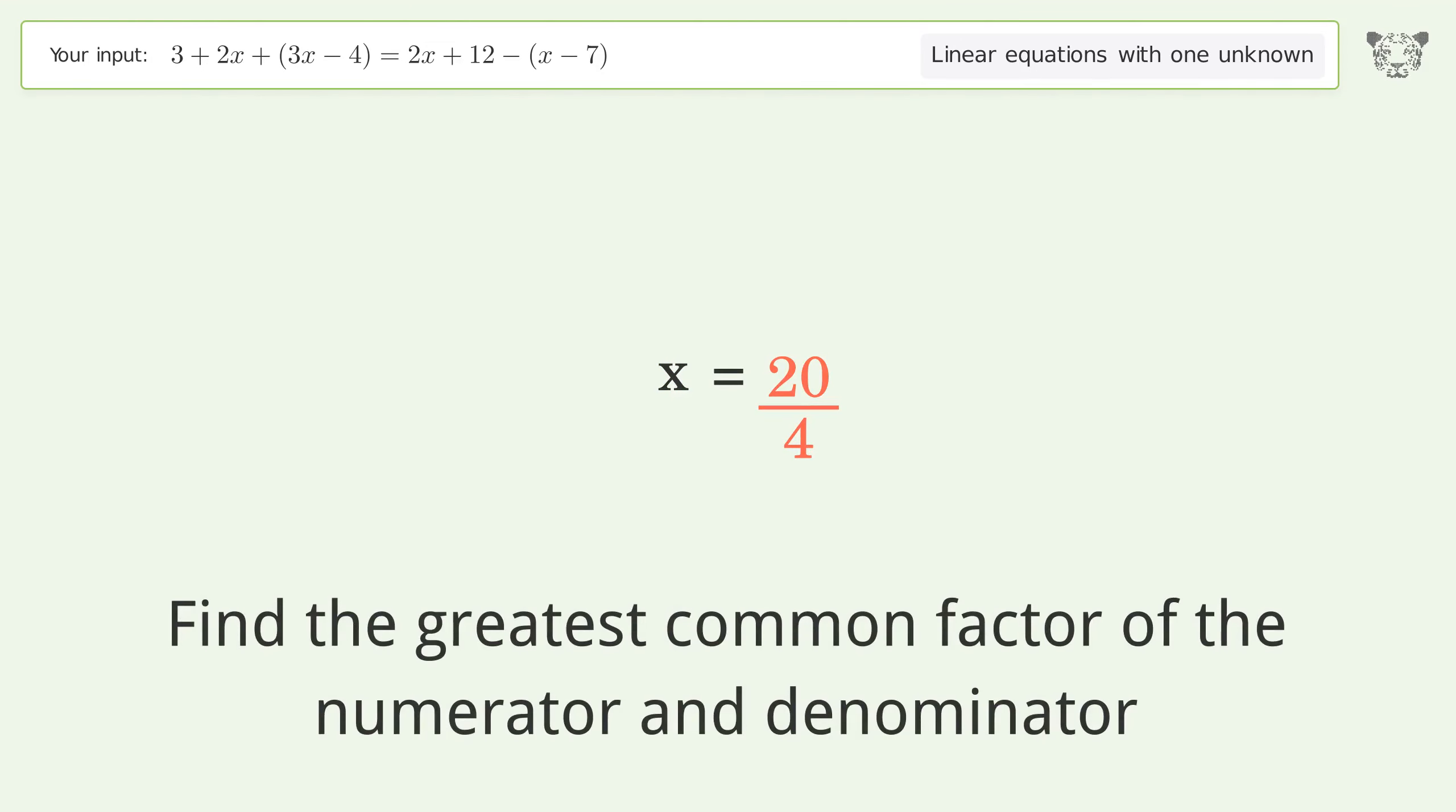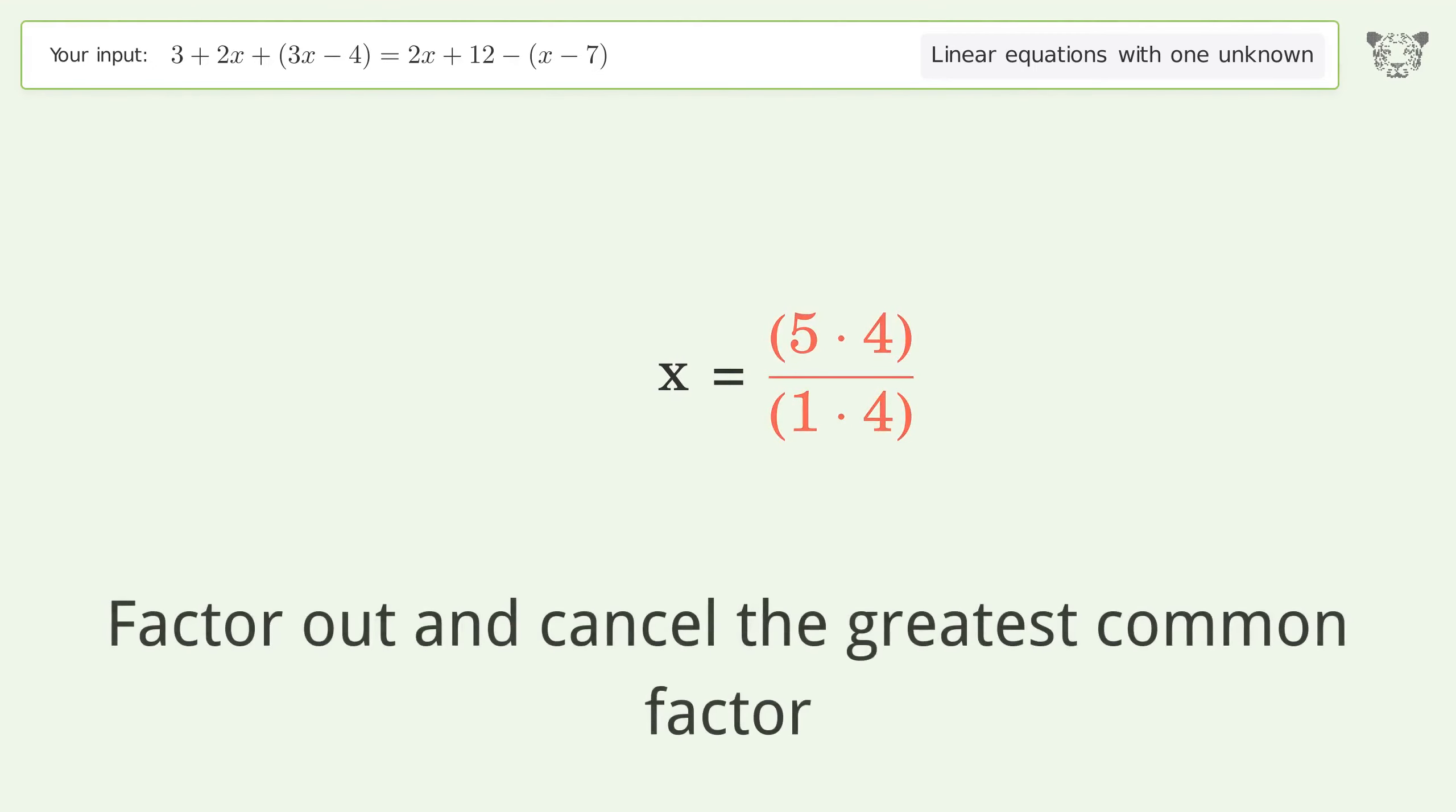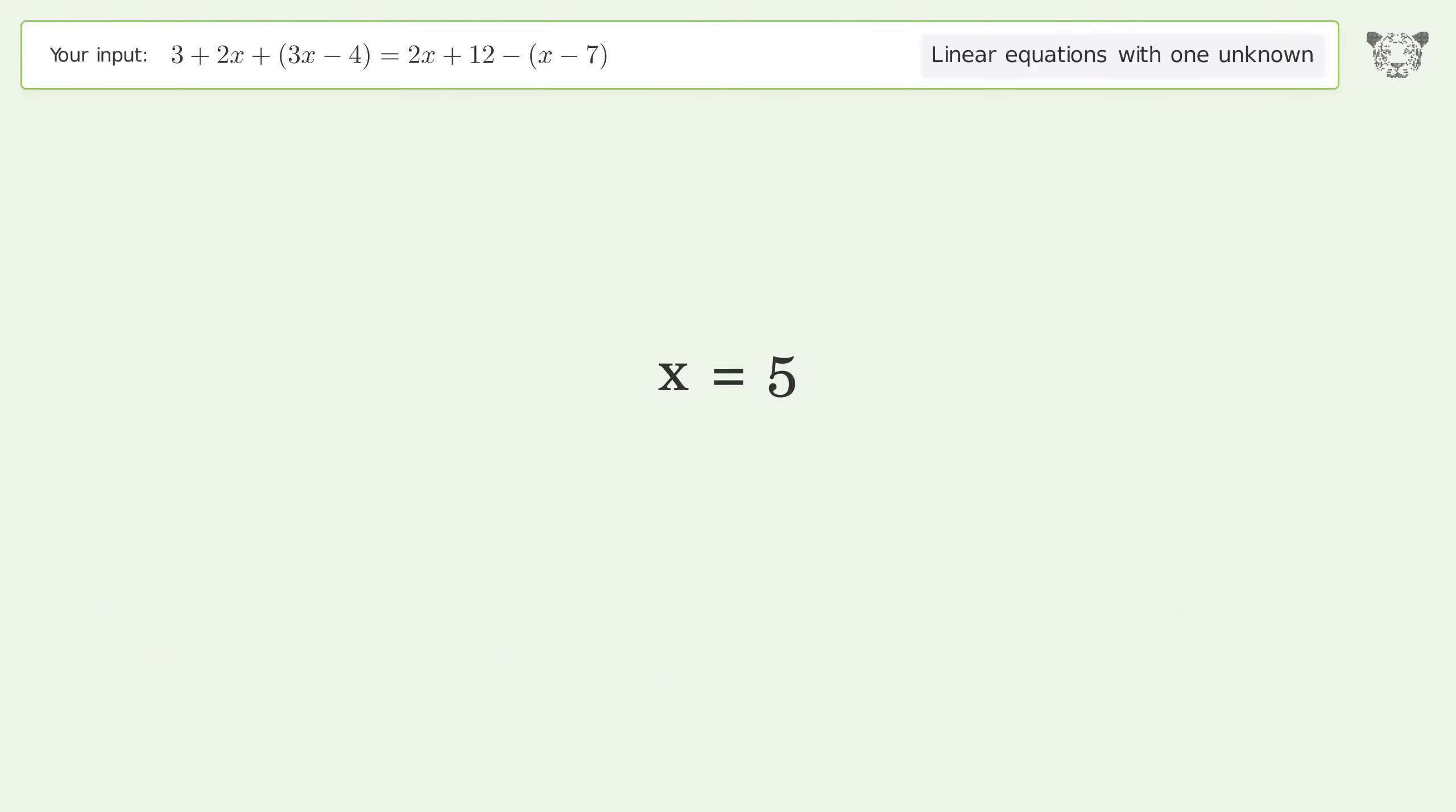Find the greatest common factor of the numerator and denominator. Factor out and cancel the greatest common factor. And so the final result is x equals 5.